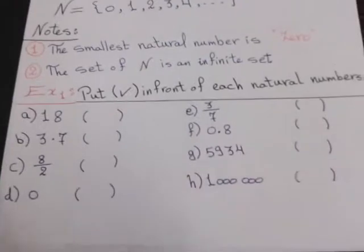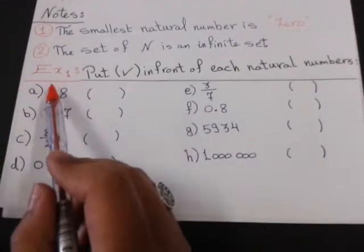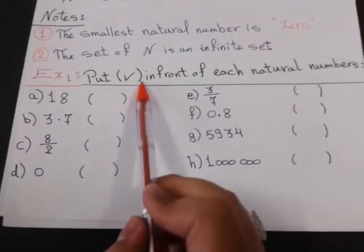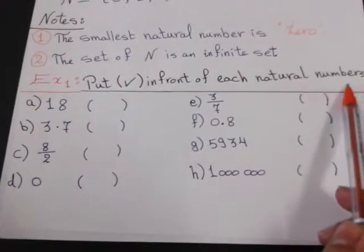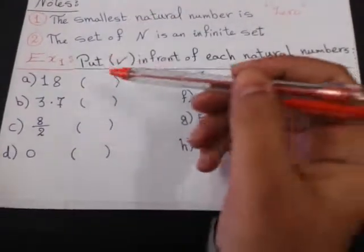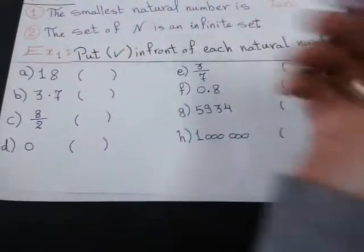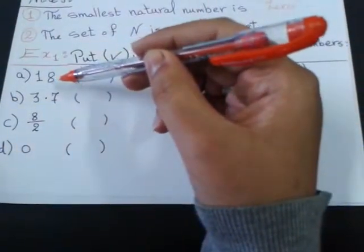Let's solve some examples on this lesson. Example number 1. Put a check mark in front of each natural number. I want to know, is this natural or no?